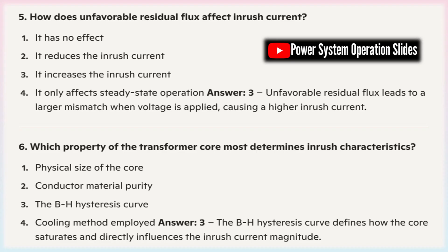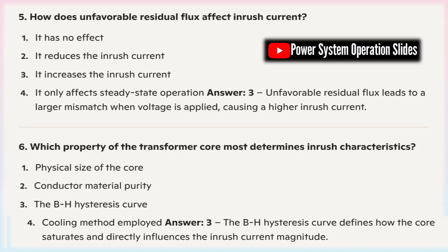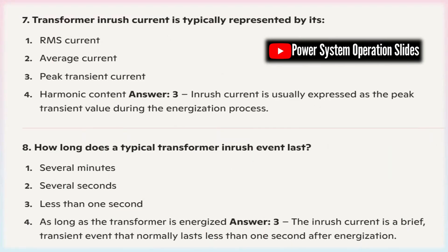Overloading power sources: The initial surge of inrush current, which can be several times higher than the transformer's rated current, can overload the power sources such as generators or other transformers supplying power to the system. This can result in voltage instability, increased losses, and decreased efficiency of the power sources.